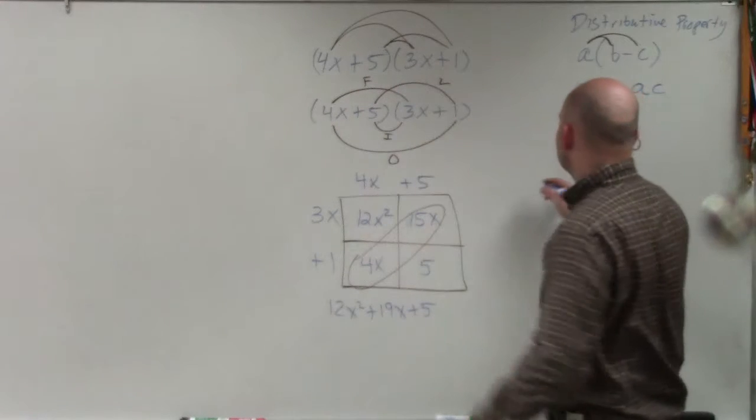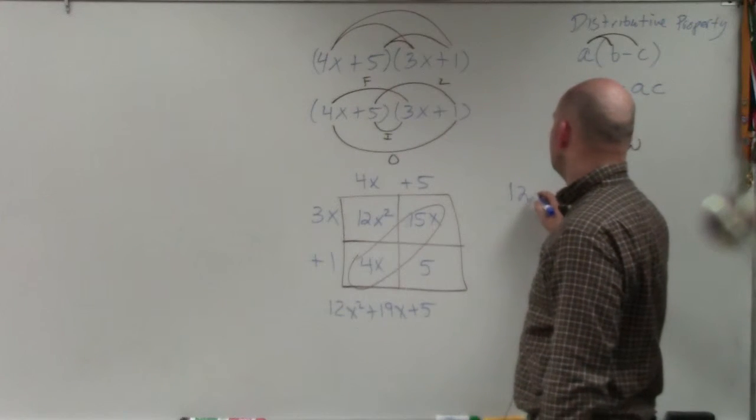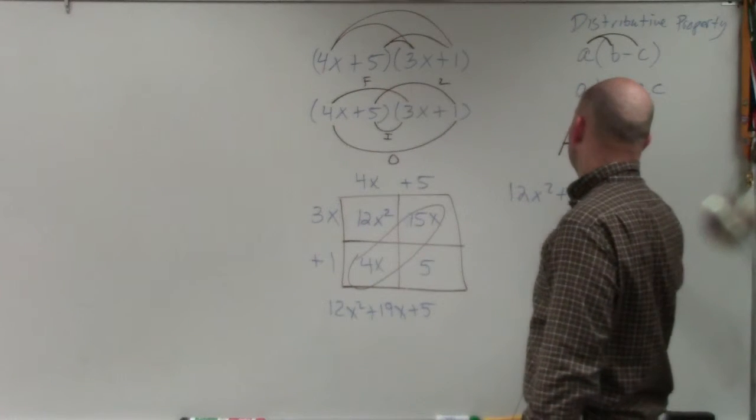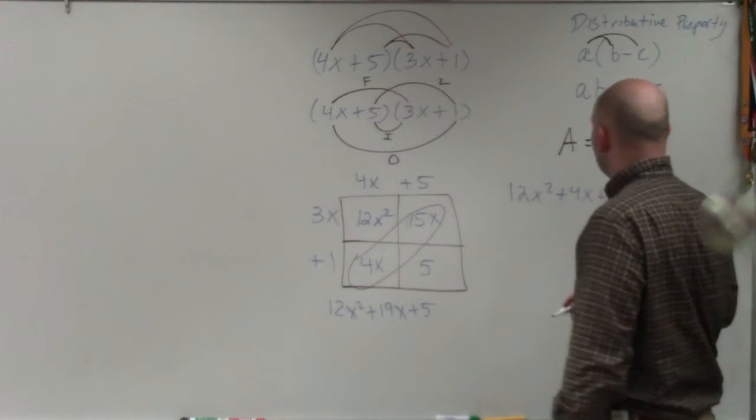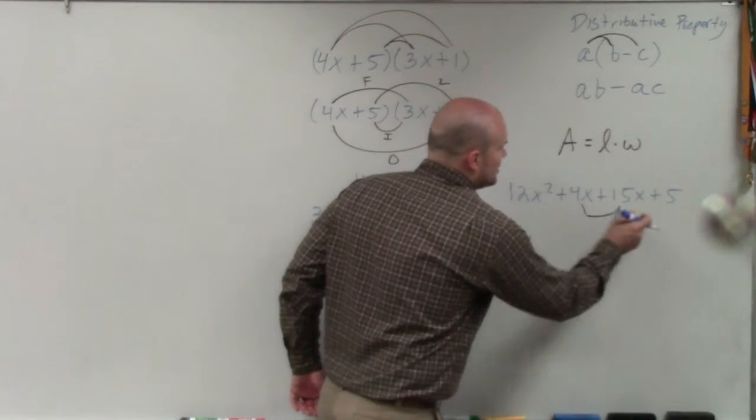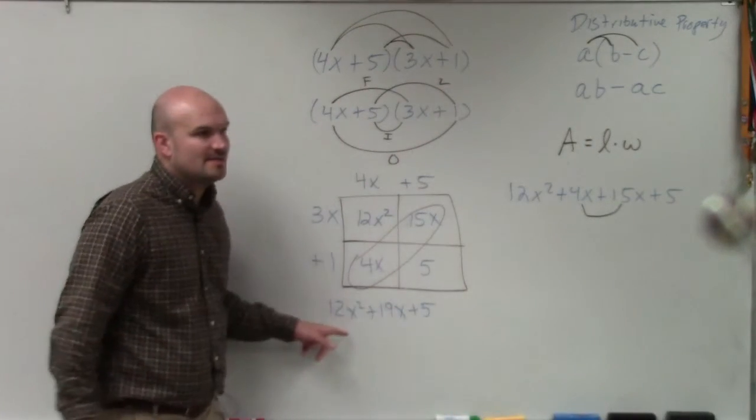If you guys were to multiply this out, it would give you the same answer, 12x squared plus 4x plus 15x plus 5. And then what you would have to do is combine your like terms to get the exact same answer.